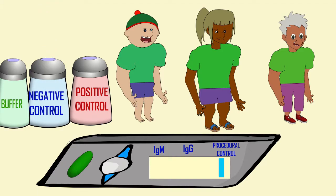In addition to this procedural control, you would also want to run a negative control. Here is a sample which does not have antibodies for coronavirus, and your test result should then say that this sample is negative.